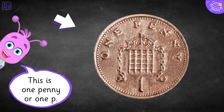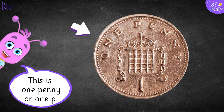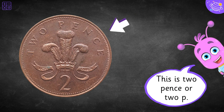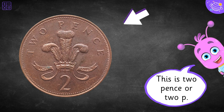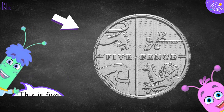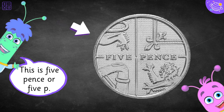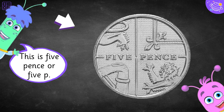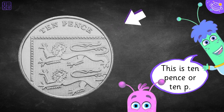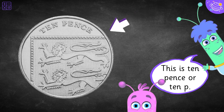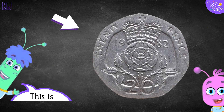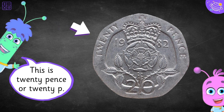This is one penny or one p. This is two pence or two p. This is five pence or five p. This is twenty pence or twenty p.